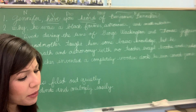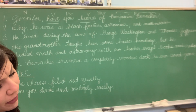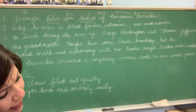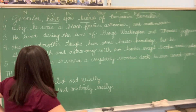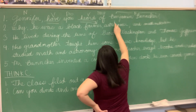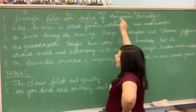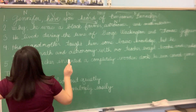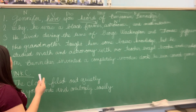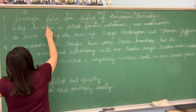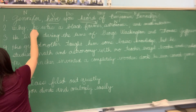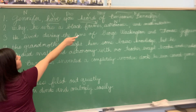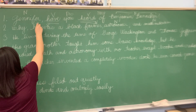Number two: He was a free black farmer, astronomer, and mathematician. I'm going to start off by seeing if I have any prepositional phrases. I don't see any here, but I do see quite a few nouns. Farmer — noun, astronomer — noun, mathematician — noun. Do you see a verb? We see 'was.' And then what is the word 'he'? He is taking the place of Benjamin Banneker, so it's a pronoun.